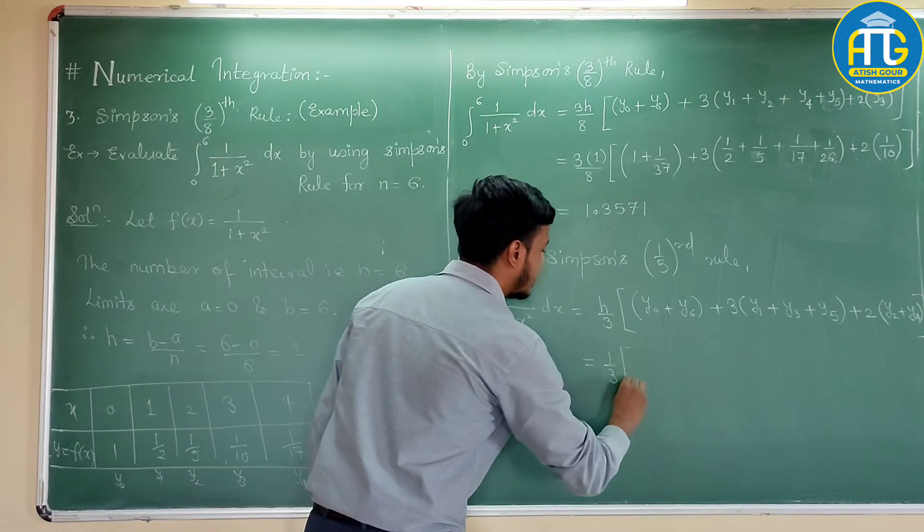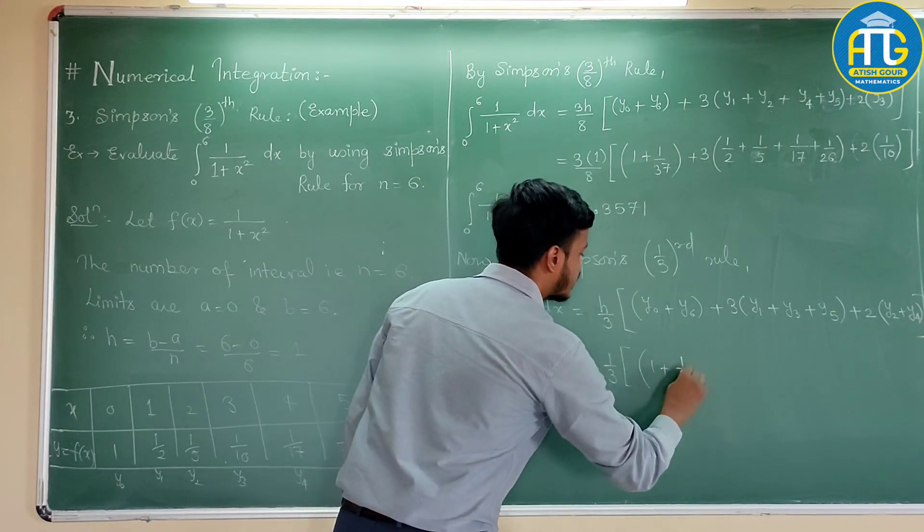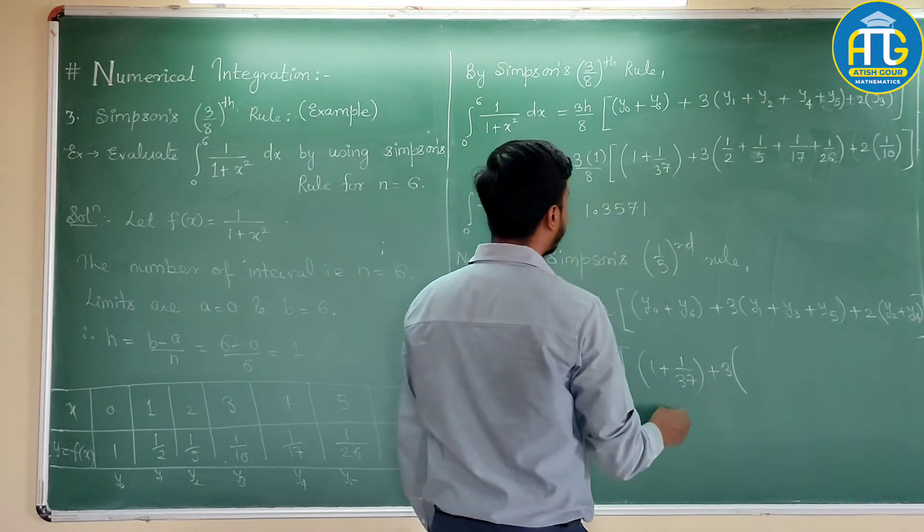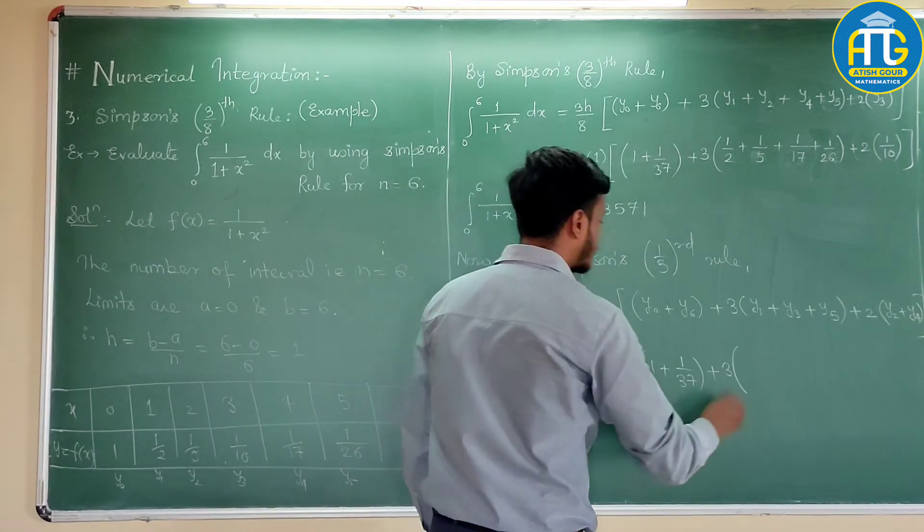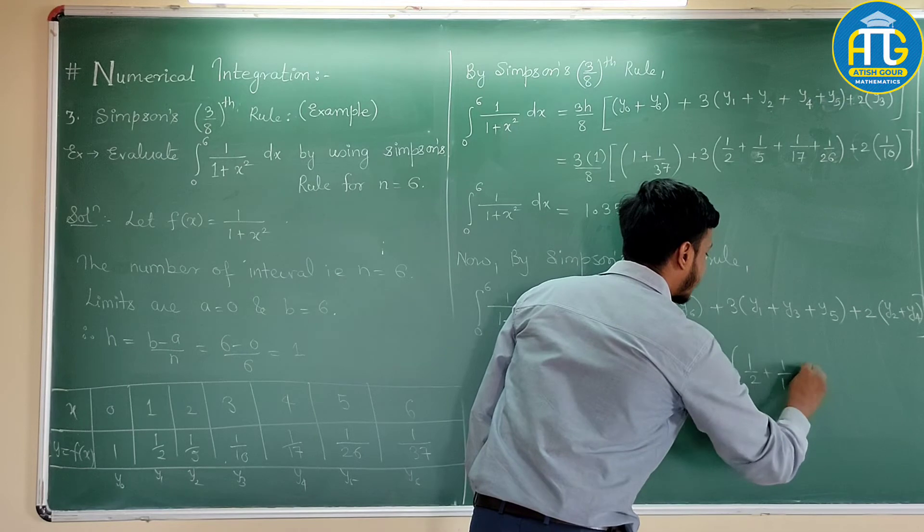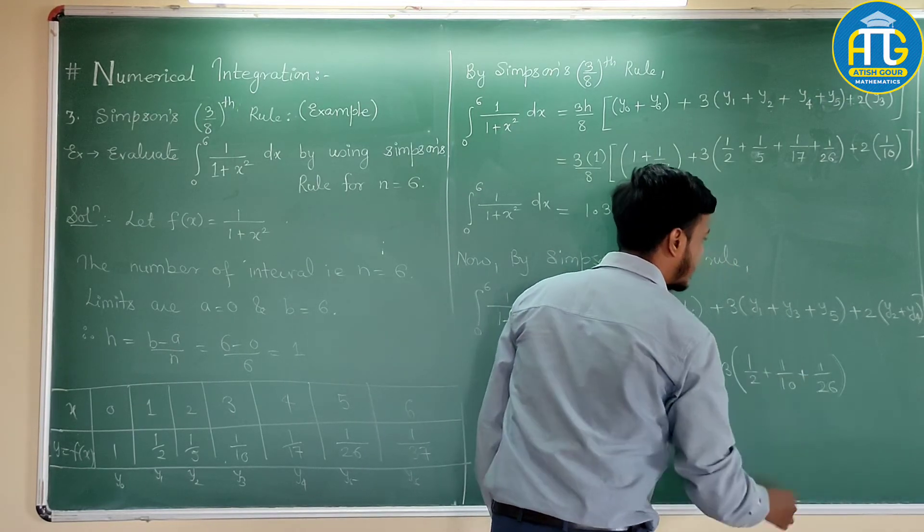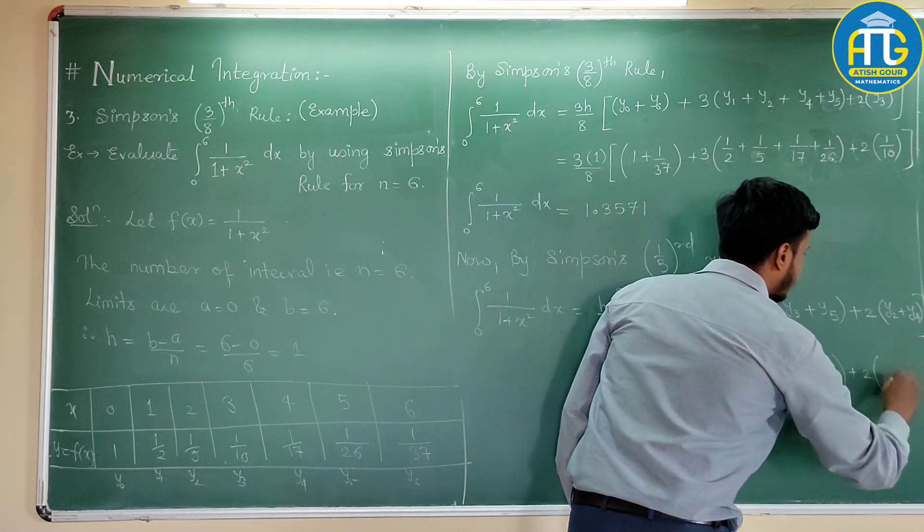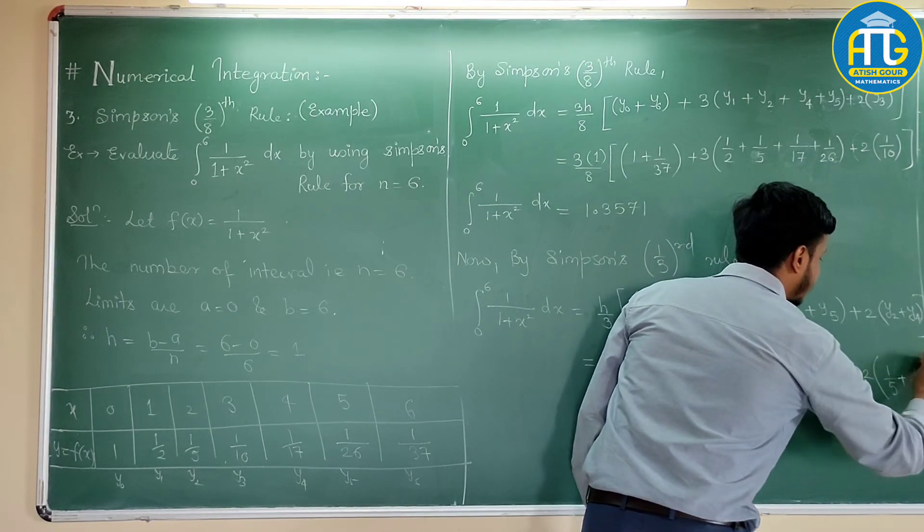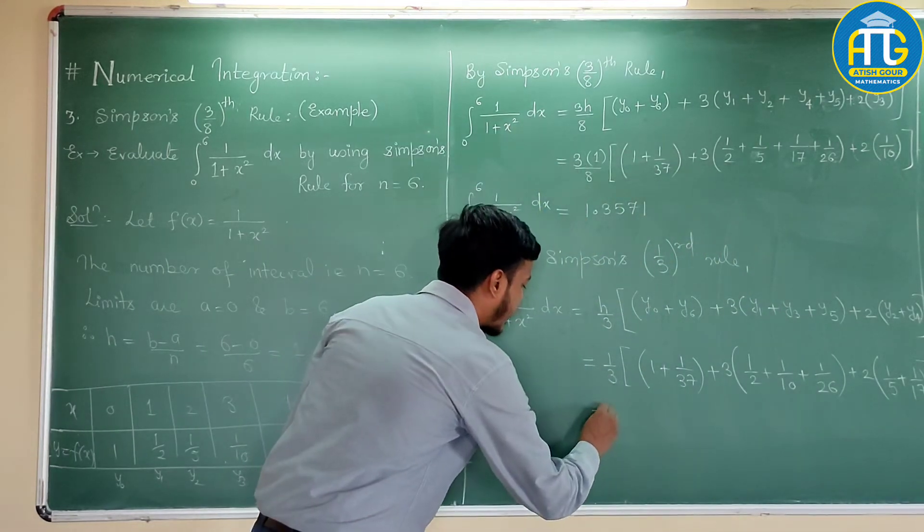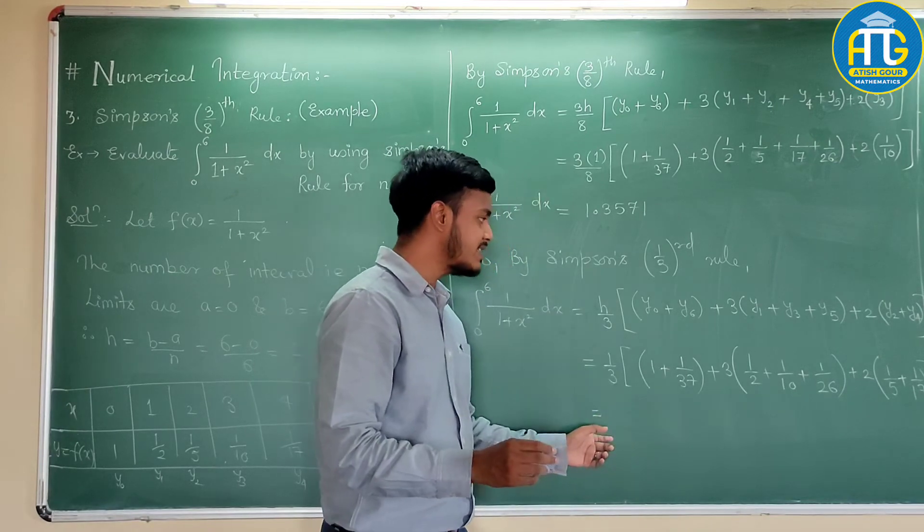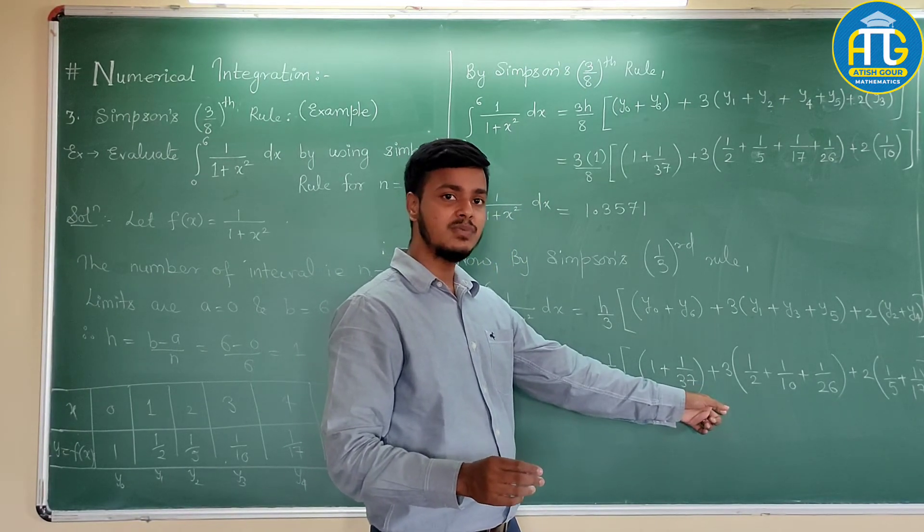So, this is 1 by 3. Here you have the value 1 plus 1 by 37 plus 4 times what is the value of y1? Value of y1 is 1 by 2. Value of y3 is 1 by 10 and value of y5 is 1 by 26 plus 2 times value of y2, 1 by 5, y4, 1 by 17. And now, I want you to pause the video for a few seconds. Try to get this answer and resume the video.